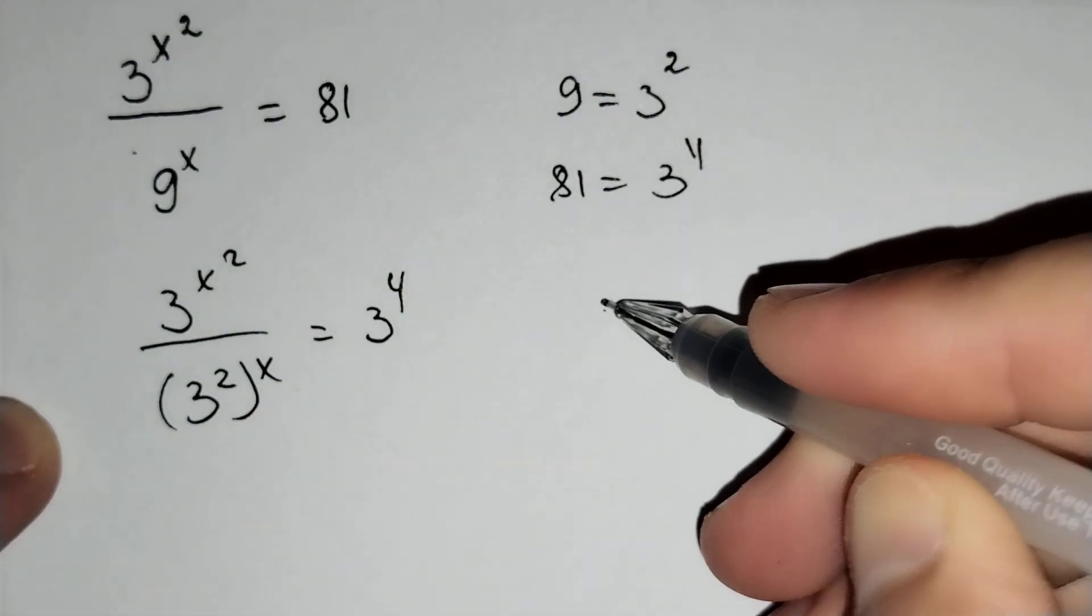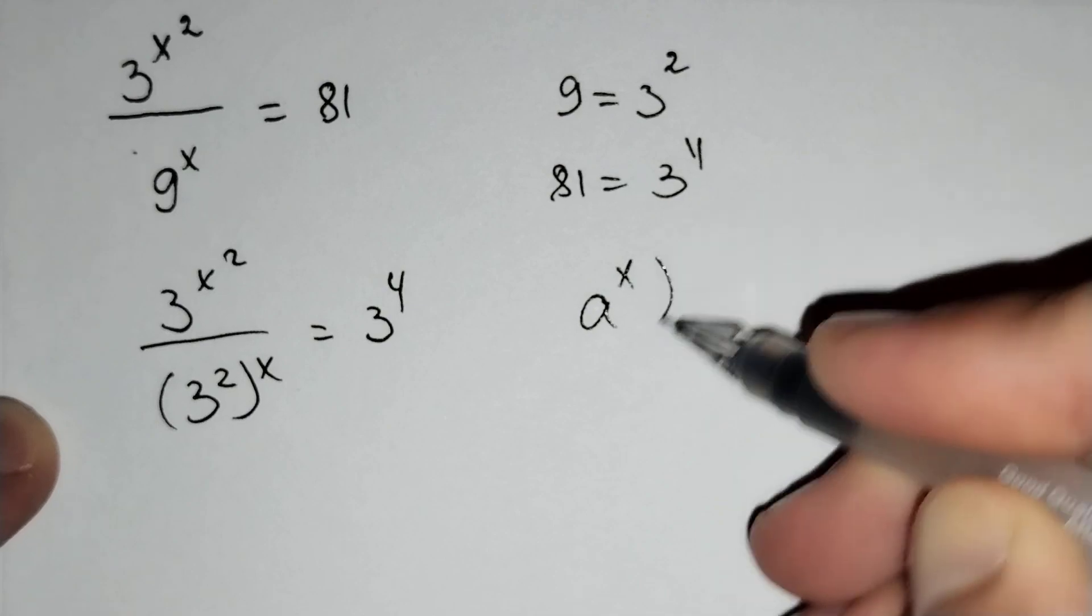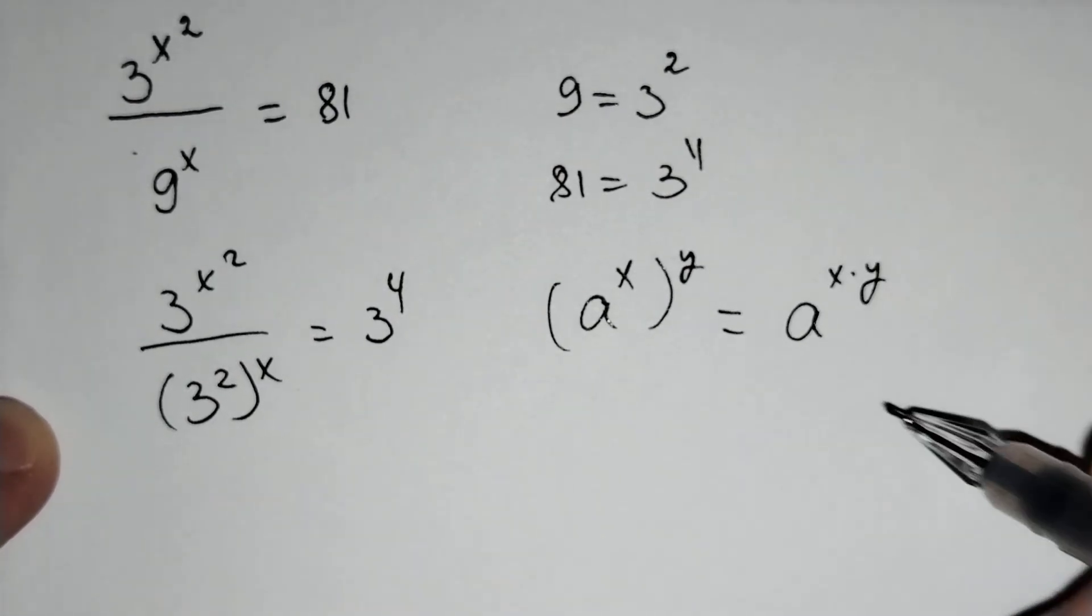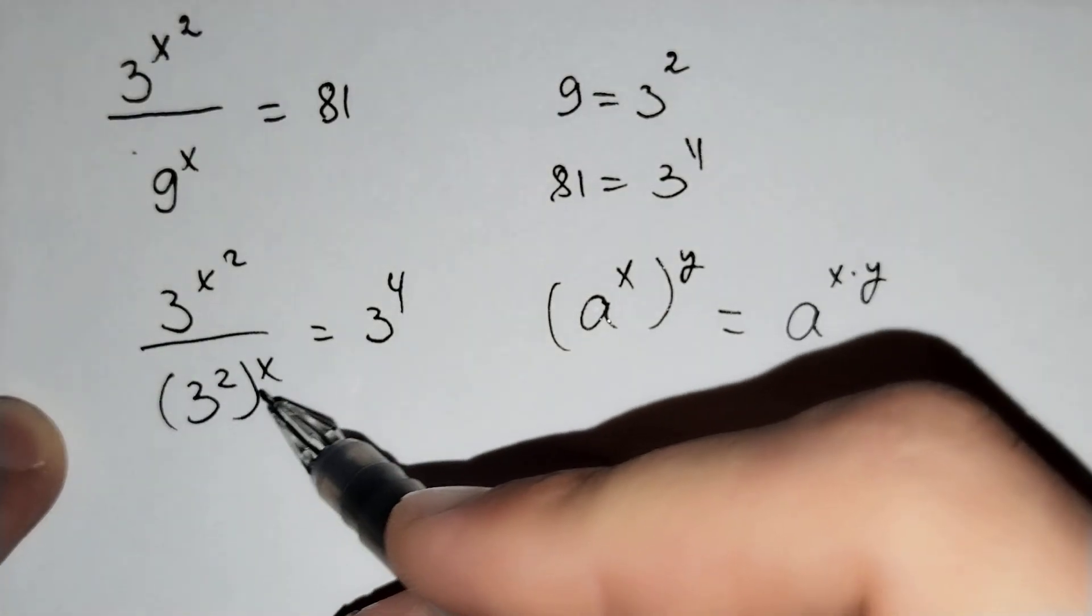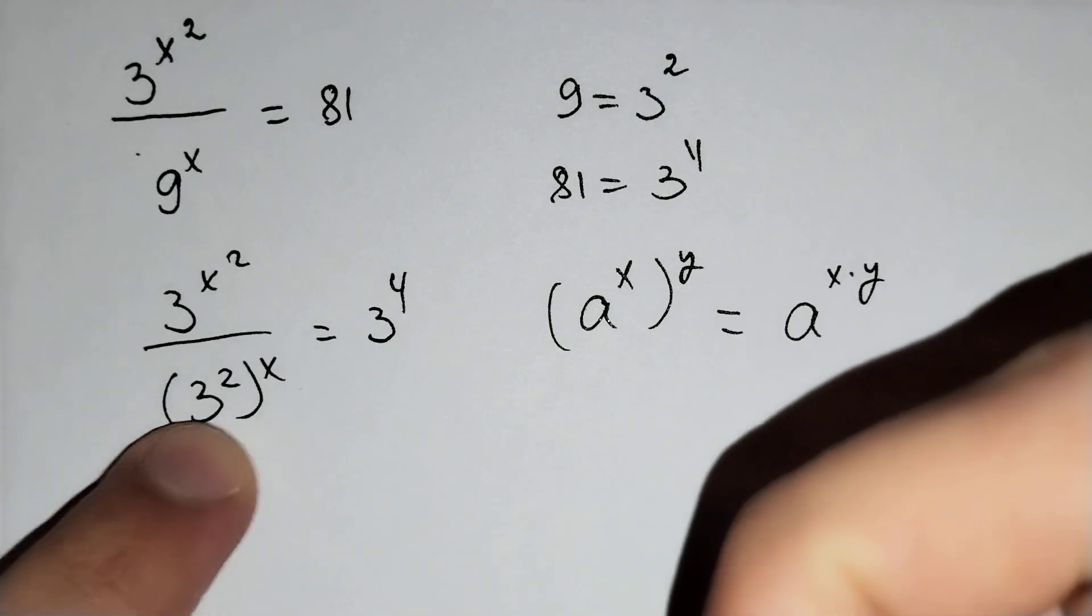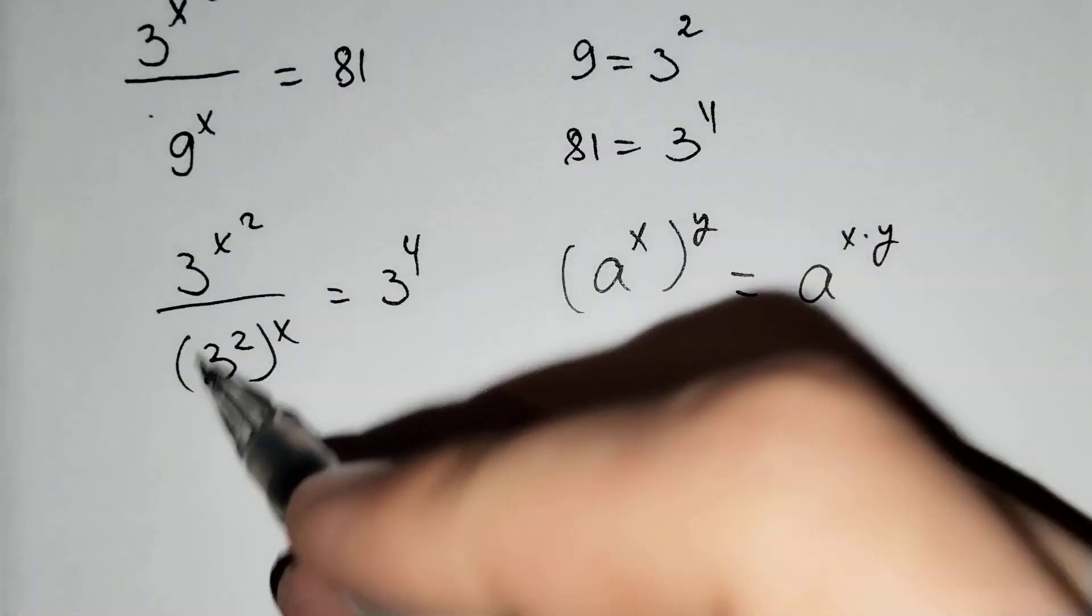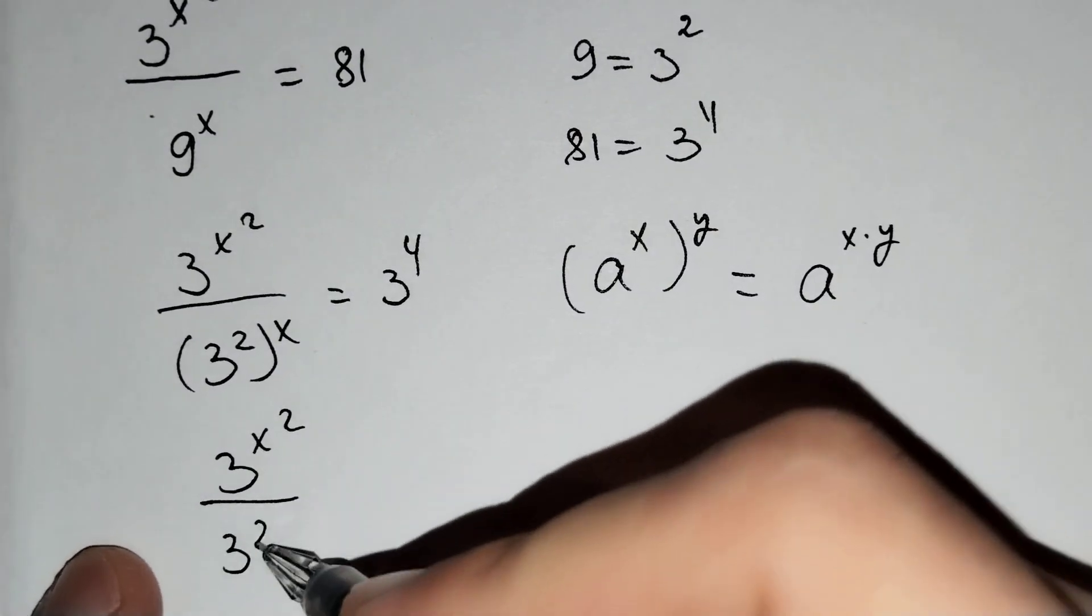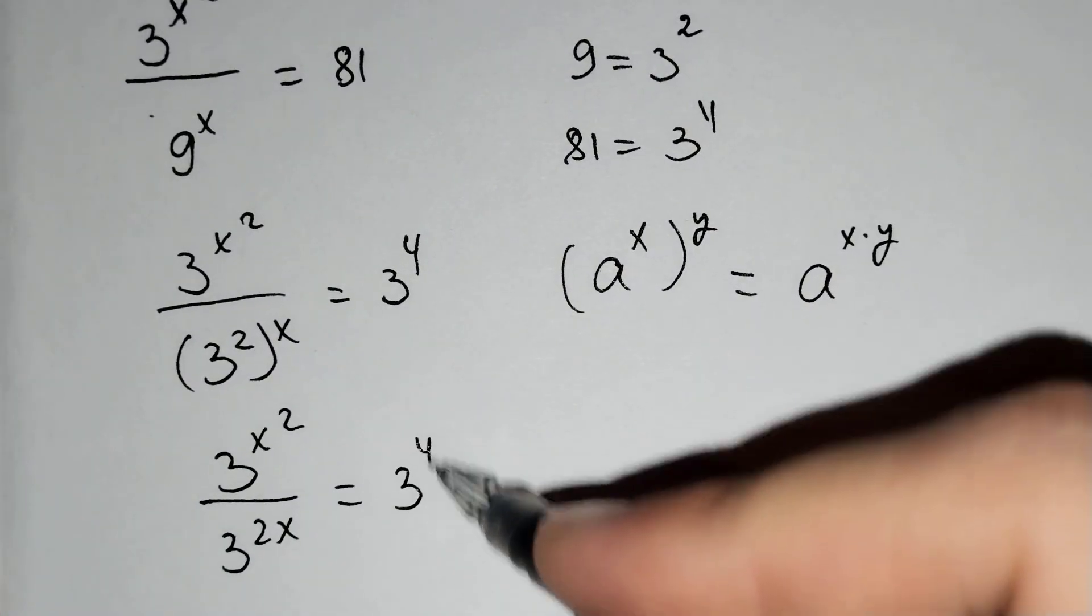And we should know that a power x brackets over y equals a power x times y. And for this formula, 3 power 2x equals 3 power 2 times x equals 3 power 4.